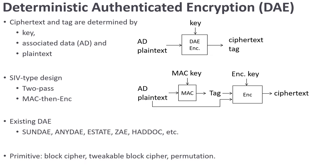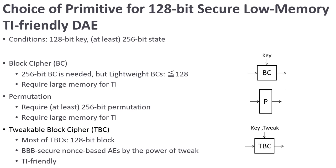DAE takes a key, associated data, and plaintext. In order to ensure security in this setting, the algorithm must ensure that each bit of the input affects the whole output. So DAE schemes have the SIV-type structure, which is two-pass, with a MAC-then-encrypt structure. Several DAE schemes have been proposed from these primitives: block cipher, tweakable block cipher, and permutation. I explain which primitive meets our goal: 128-bit secure, low memory, and TI-friendly DAE.